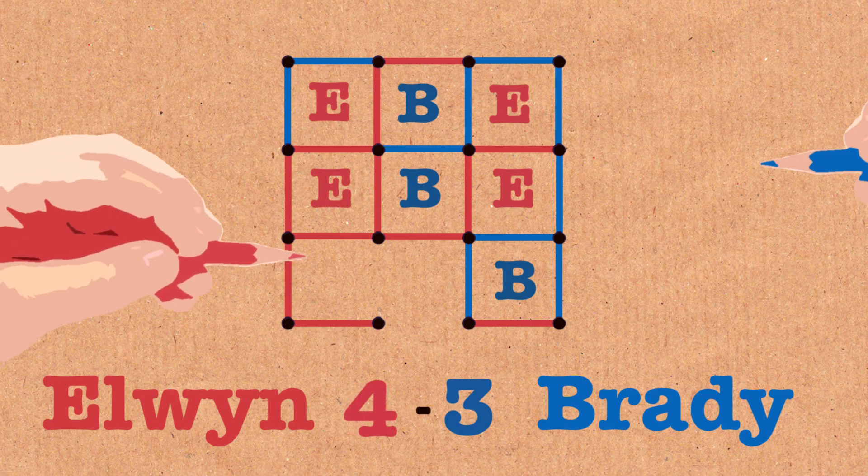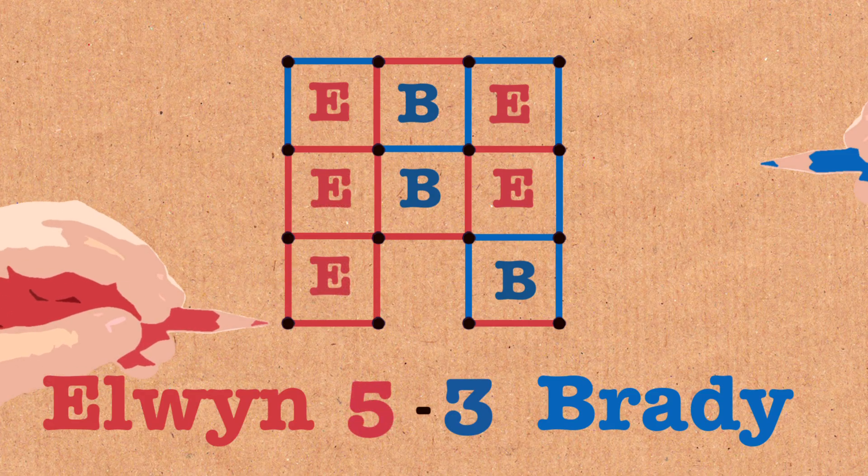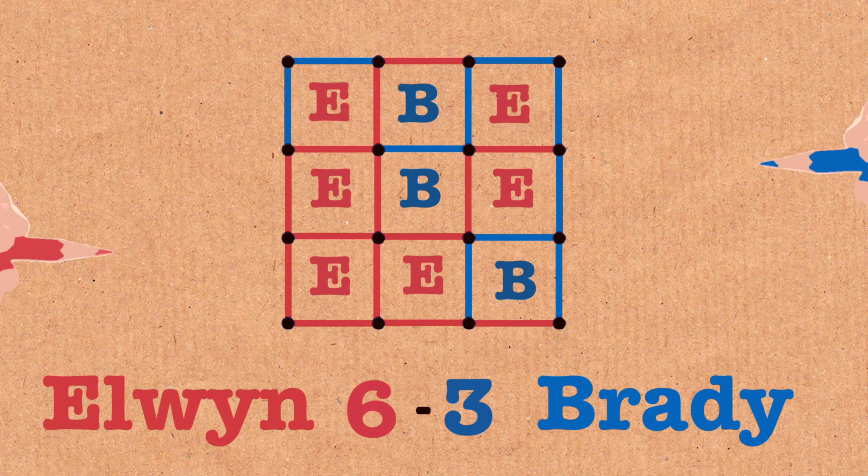So every time I make a box I get an extra turn and I go on like this and so the score is six for me and three for him.